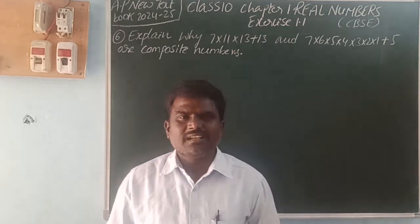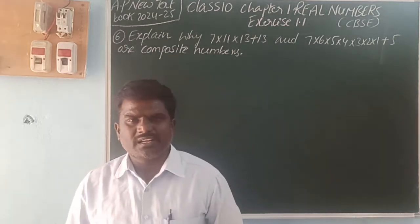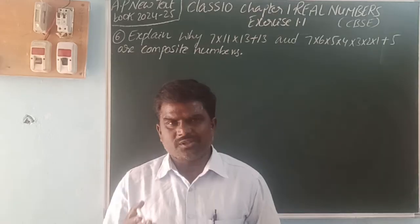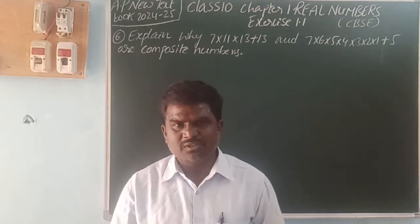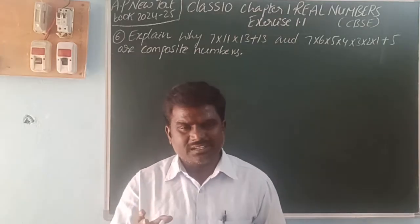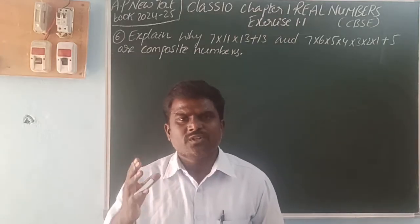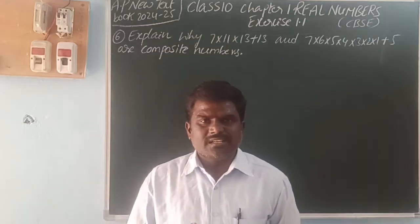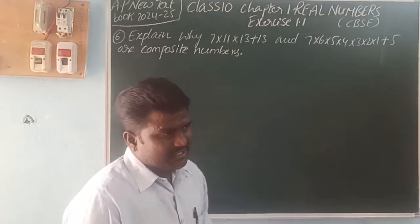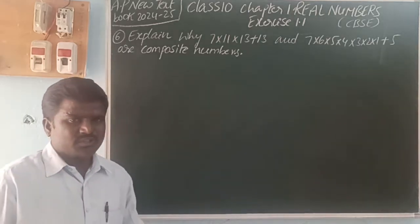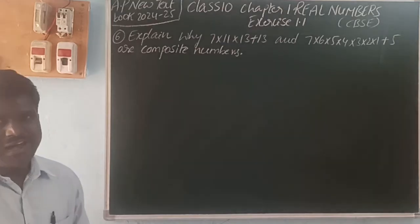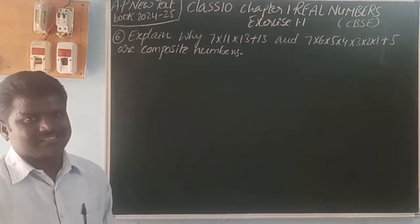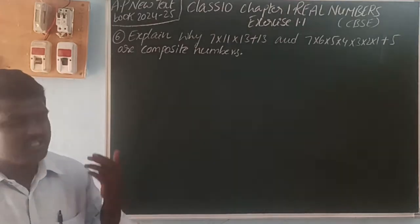For example, 30 — we can write it as 2×3×5. So 30 is a multiple of 1, 2, 3, 5, 6, 10, 15, 30. A number having more than 2 factors, or a number which has multiples other than 1 and itself, is called a composite number.